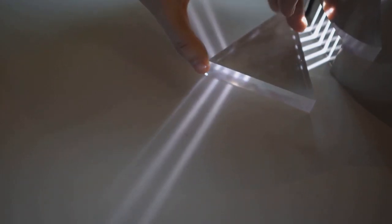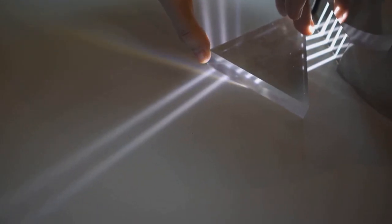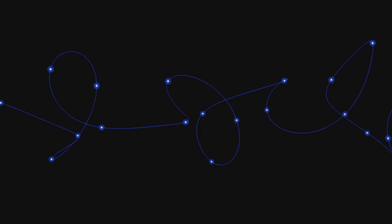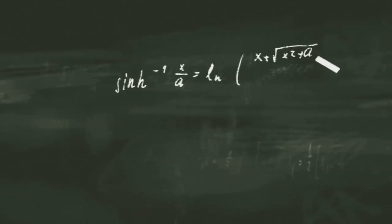Have you ever wondered why light takes the fastest path from one point to another? This is Fermat's principle. Light travels the path of least time. Fermat's principle is a special case of the principle of least action. By minimizing action, light minimizes travel time.